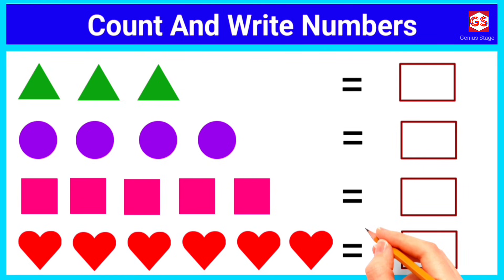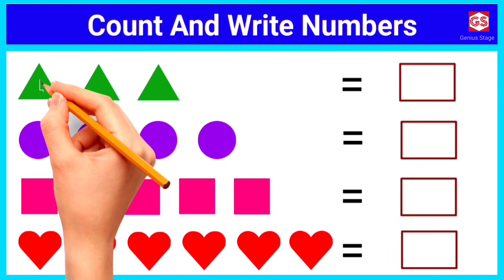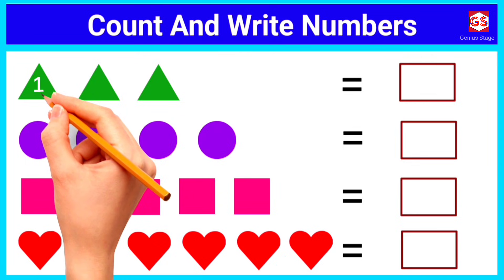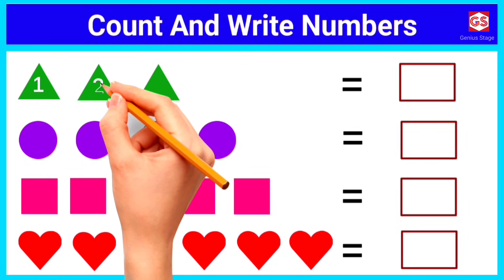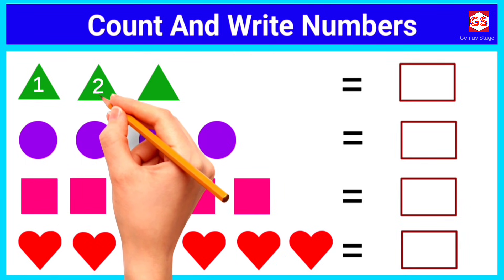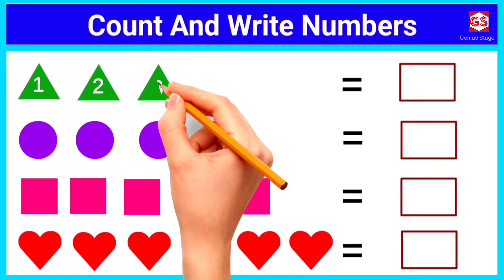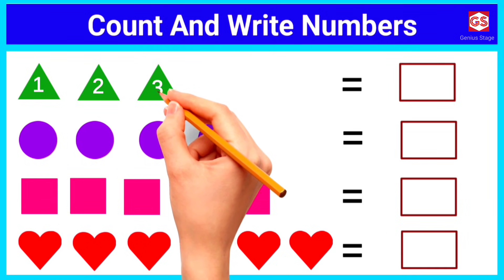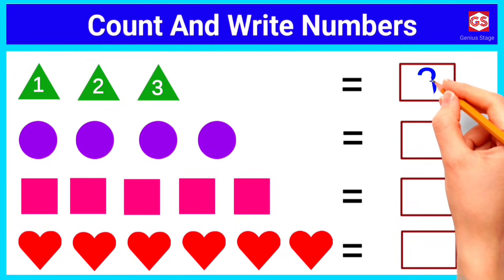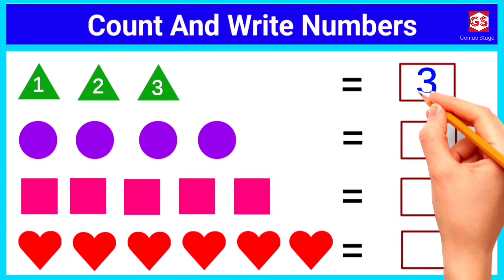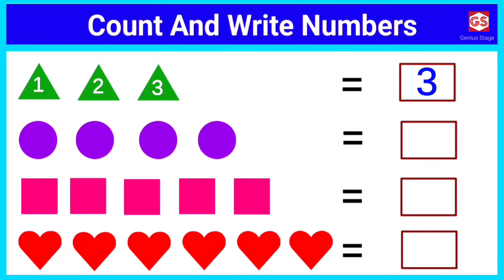In the first question, let's count the triangles. 1, 2, 3. There are 3 triangles in total.